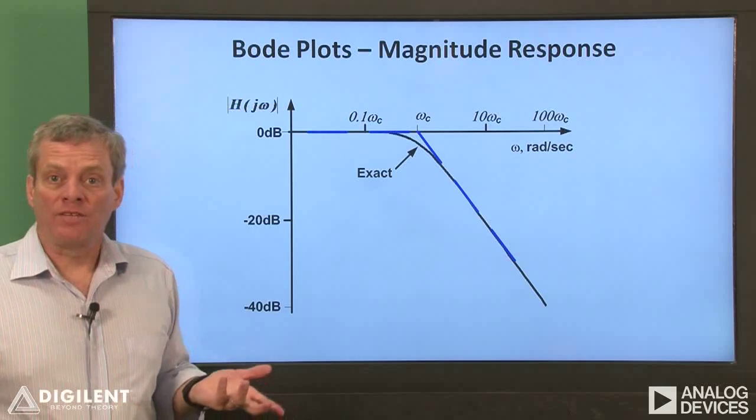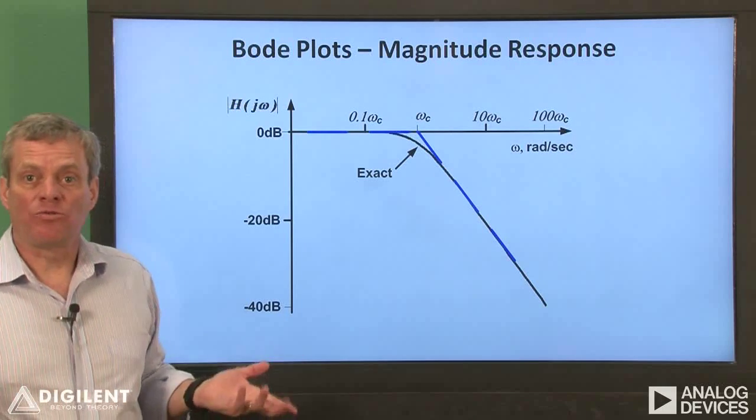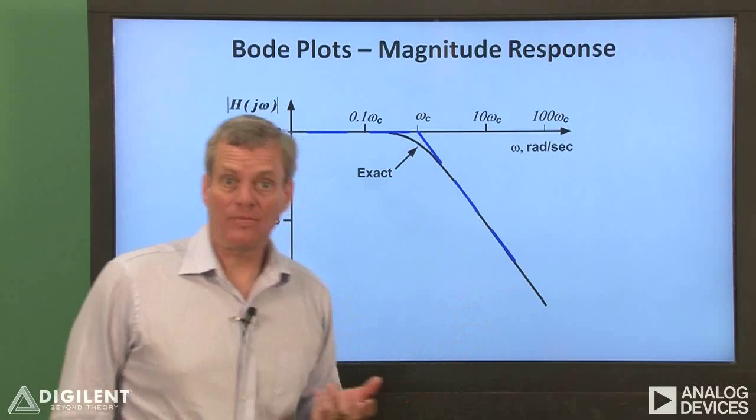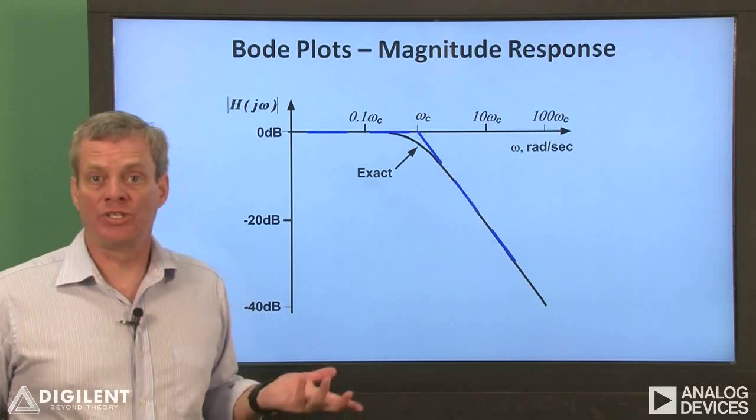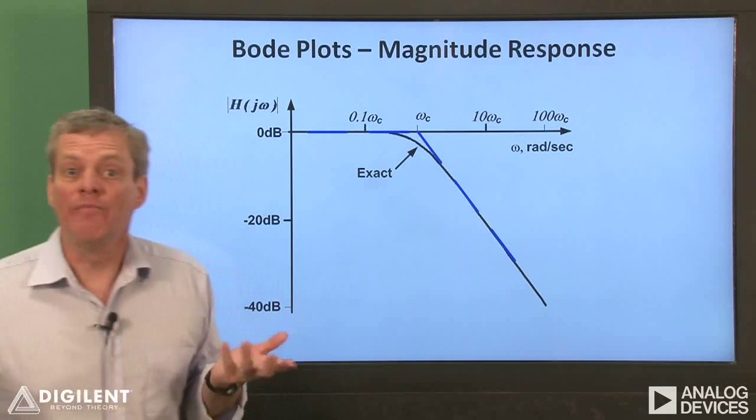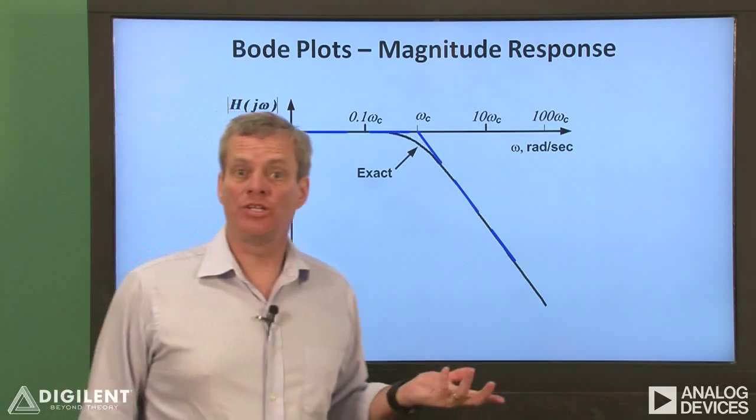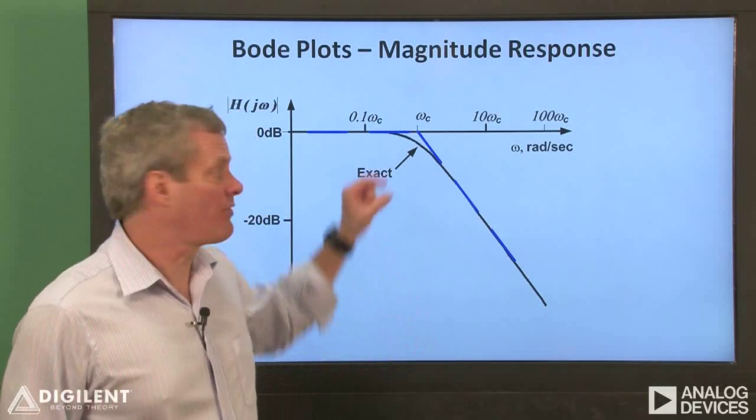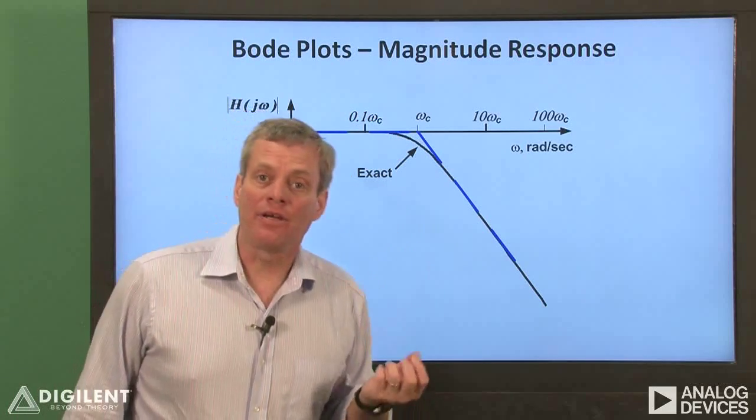For a first-order low-pass filter, the actual frequency response will be as shown. It asymptotically approaches the straight-line approximation at low and high frequencies. The maximum error between the approximation and the actual responses will be a difference of 3 dB, which is at the cutoff frequency.